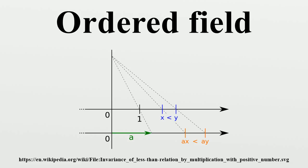Total order: A field together with a total order on F is an ordered field if the order satisfies the following properties for all A, B, and C in F.